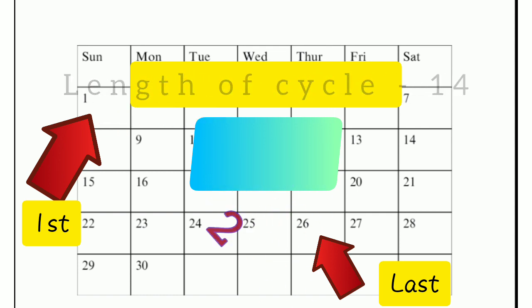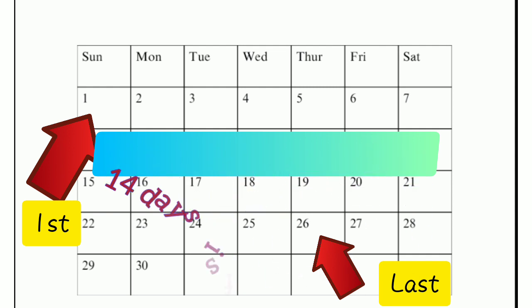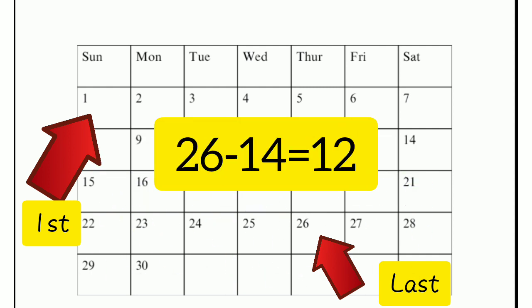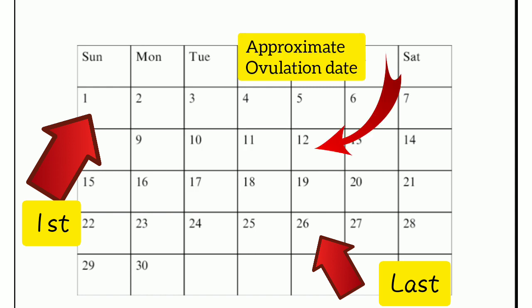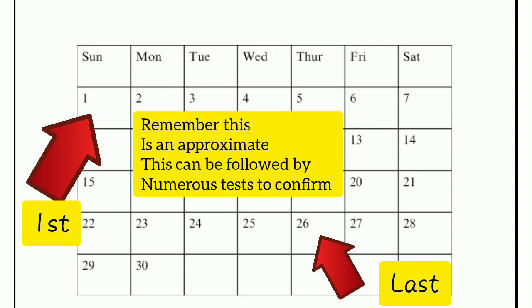The 14 days is the constancy of the luteal phase of the menstrual cycle. Remembering that the menstrual cycle has the follicular phase and the luteal phase, and usually the luteal phase is constant. So you just get your 26 minus 14, which is 12 — around the 12th day of your cycle is when your ovulation is going to occur. Take note, this can vary by one day probably, but it will be around the 12th day of your menstrual cycle.